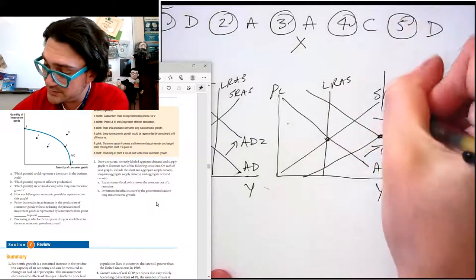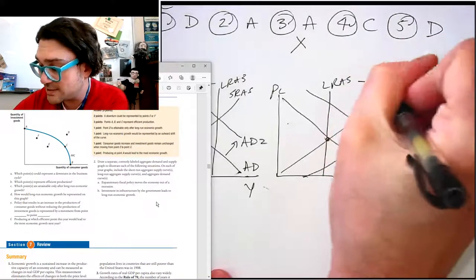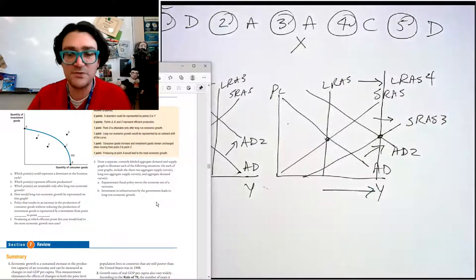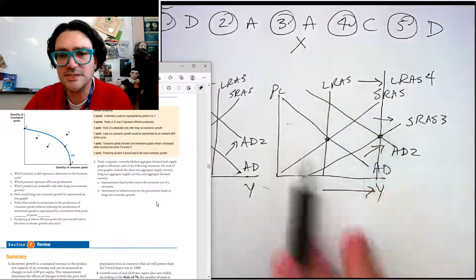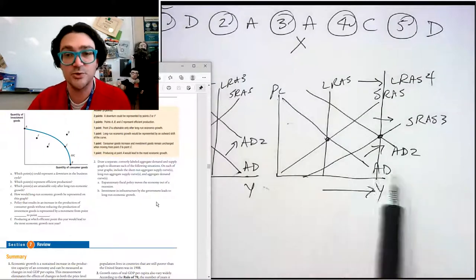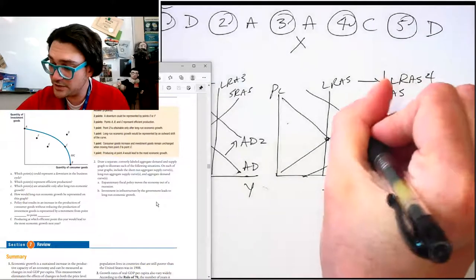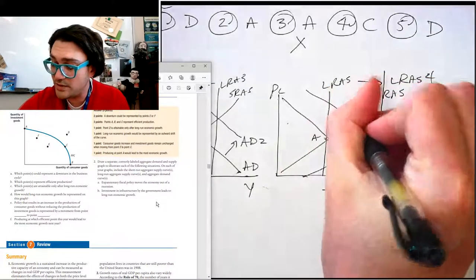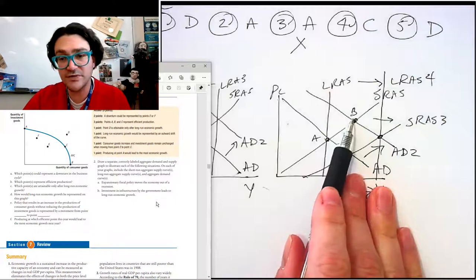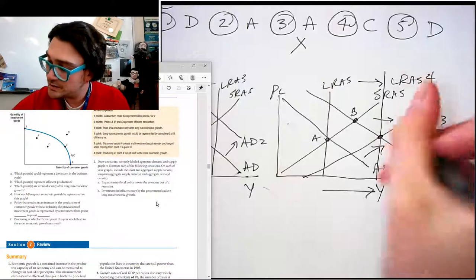And we know that eventually, right, LRAS will eventually catch up with them. And that's the economic growth part. So it's a triple shift. Whoa. You're not going to be asked to do something like that on the test. But the idea is that the investment spending, the infrastructure spending increases the aggregate demand. And so initially, right, you would go from like point A to point B, but then as that infrastructure really increases productivity, it would shift us over here with SRAS three to point C.